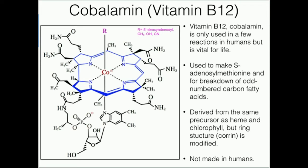The 'cobe' in the name cobalamin comes from the fact that this particular macrocyclic structure shown in blue has a cobalt in the center. We've seen macrocyclic structures such as heme that have iron, and we've certainly seen chlorophyll that has magnesium, but cobalamin or B12 has a cobalt. Changing the transition metal actually changes the properties of cobalamin. We actually have a playlist dedicated to cobalamin, which this video will also be placed in.